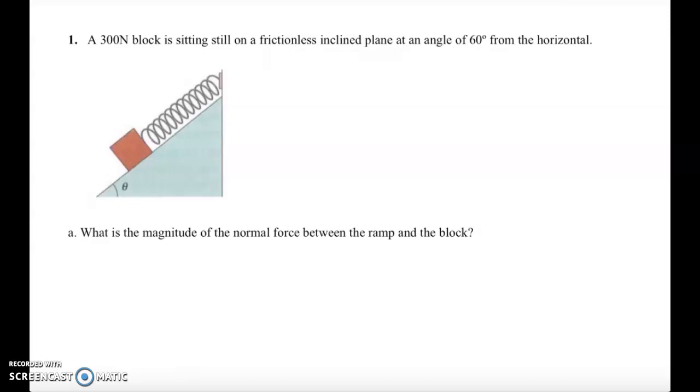In this video, I wanted to do a mechanics problem that involved an inclined plane. This problem reads: a 300 Newton block is sitting still on a frictionless inclined plane at an angle of 60 degrees from the horizontal. So I'll just add that to our diagram here. We are asked in part A what is the magnitude of the normal force, Fn, between the ramp and the block.